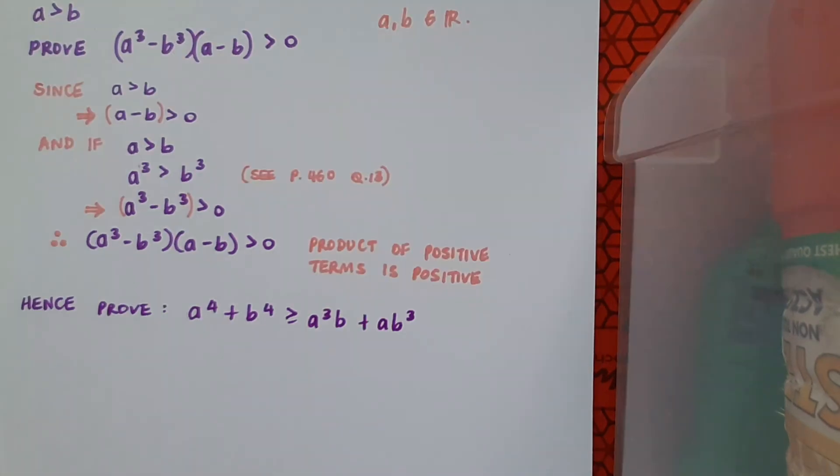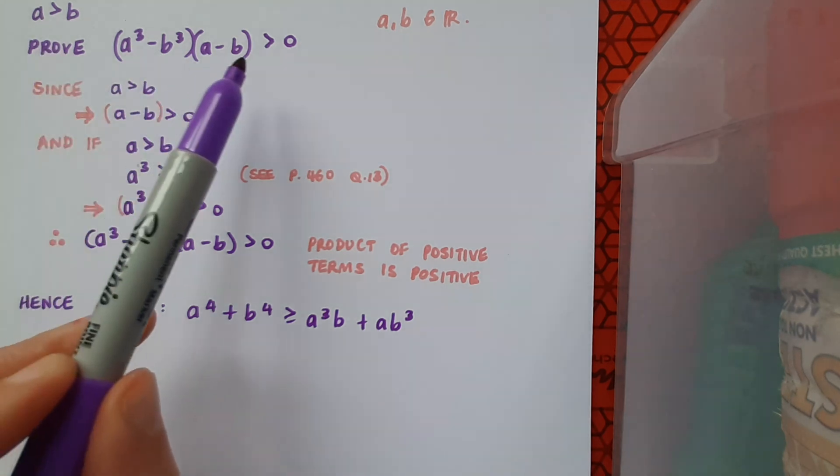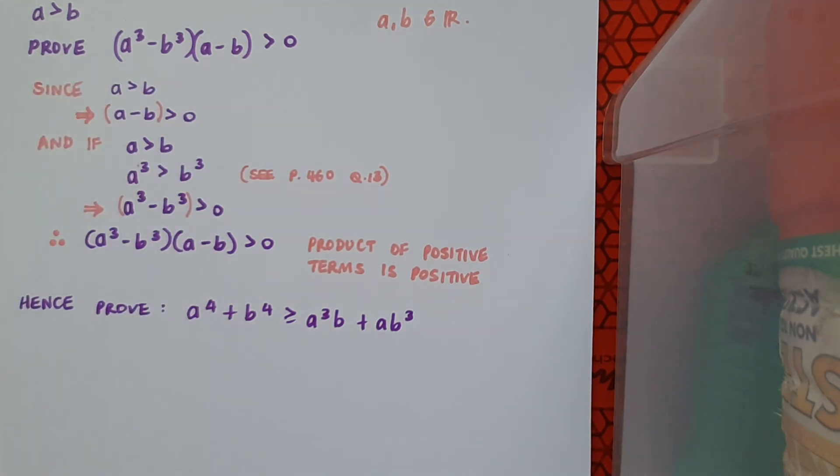On the basis of this conclusion, I then want to go on to prove that a to the 4 plus b to the 4 is greater than or equal to a cubed b plus a b cubed. And it's pretty easy to achieve this proof in this part of the question, because it just requires us to really multiply out our statement that we're best to prove in the first part of the question.